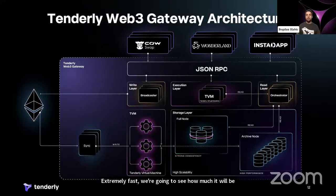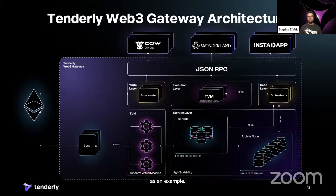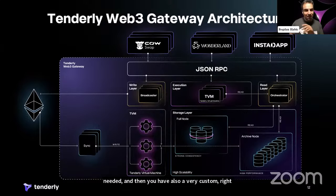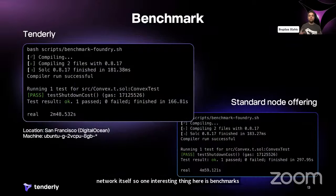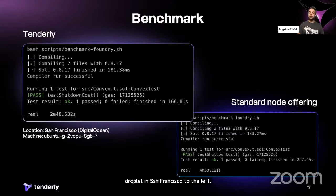We also have the JSON-RPC layer, which you'll mostly be interfacing with. If you send an ETH call, for example, the Tenderly virtual machine processes the transaction, uses the underlying storage engine, and returns the data extremely fast. We also have orchestrators that can theoretically scale infinitely horizontally for as many readers as needed. Now for benchmarks — this is the Convex community benchmark that you can run yourself. Running it on a Digital Ocean droplet in San Francisco, Tenderly is almost twice as fast as the current standard node offering. From Frankfurt, running the same benchmark, Tenderly is six times faster.